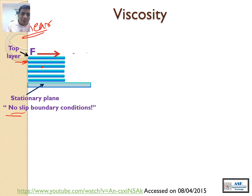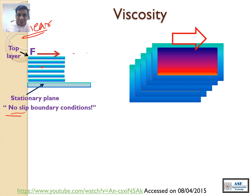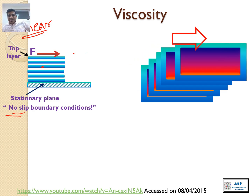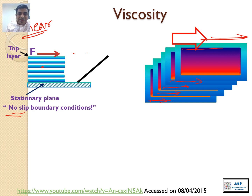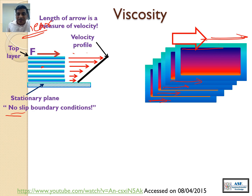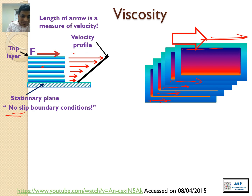We get a certain velocity profile, and the lines indicate the magnitude of velocity. The first plate is moving the longest way, the second a little bit less, the third a little bit less, the fourth a little bit less, and the fifth very little. We can get a certain velocity profile where these lines indicate the magnitude of velocity. And what is velocity? Let's recap high school physics: velocity equals distance over time.